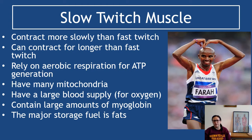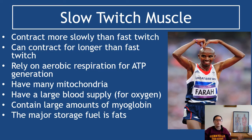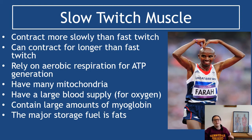Slow twitch muscle fiber features: they contract more slowly than fast twitch, but can sustain contractions for much longer. They rely on aerobic respiration for ATP production, producing large amounts of ATP to supply those long slow contractions. They have many mitochondria, a large blood supply delivering oxygen and glucose, and contain large amounts of myoglobin. Their major storage fuel is fats.